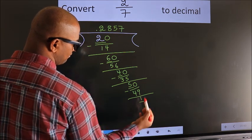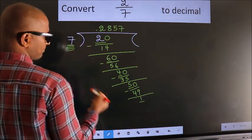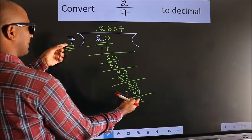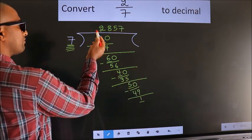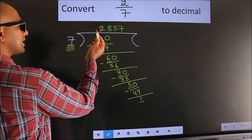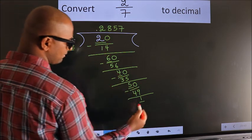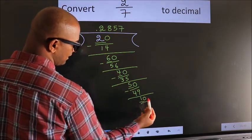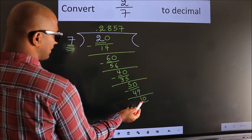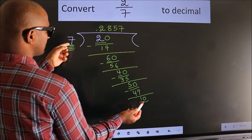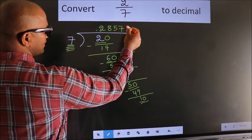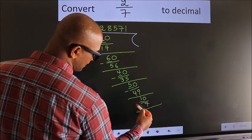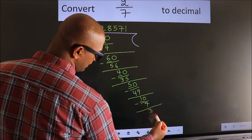Here we have 1, here 7. 1 is smaller than 7. And we already have the decimal, so we can directly take 0 — making it 10. A number close to 10 in the 7 table is 7 ones 7. Now we subtract and we get 3.